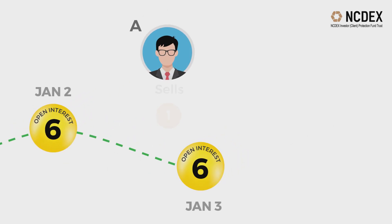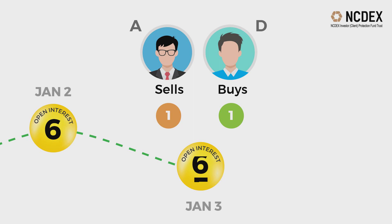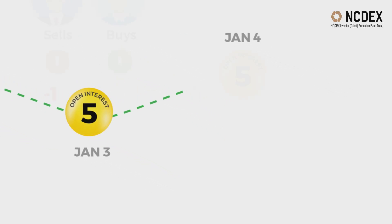On January 3rd, existing participant A sells 1 contract and squares off his position of January 1st. Existing participant D buys 1 contract and partially squares off his position of January 2nd. OI goes down from 6 to 5, down 1.